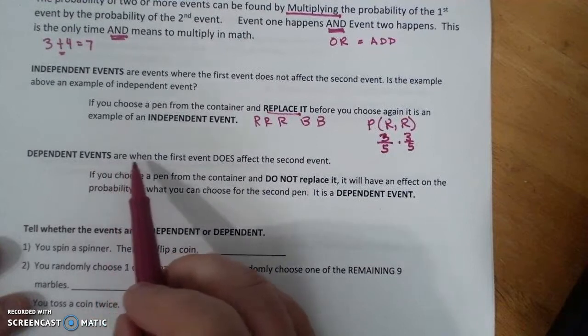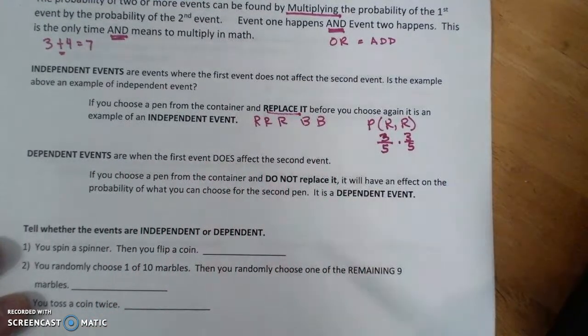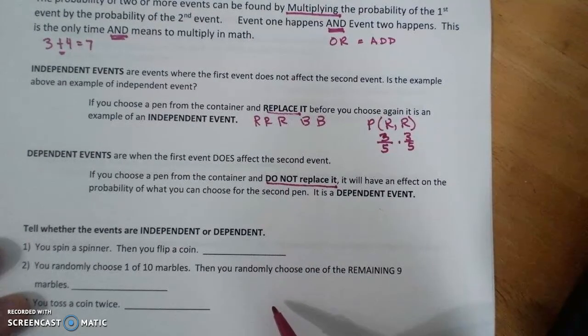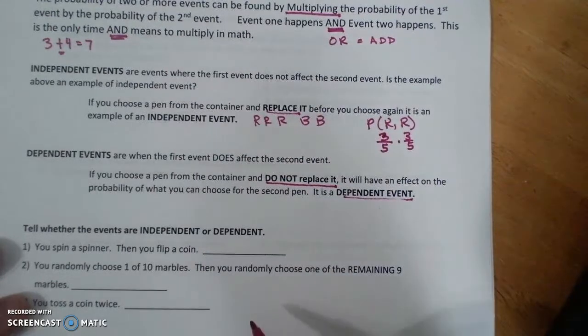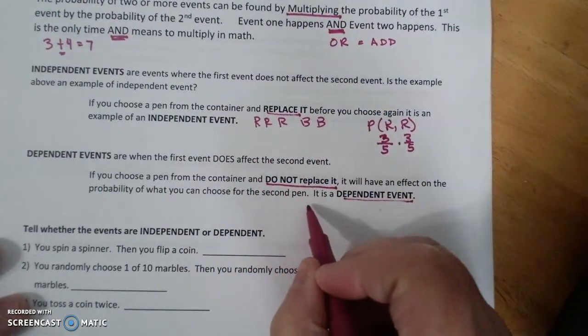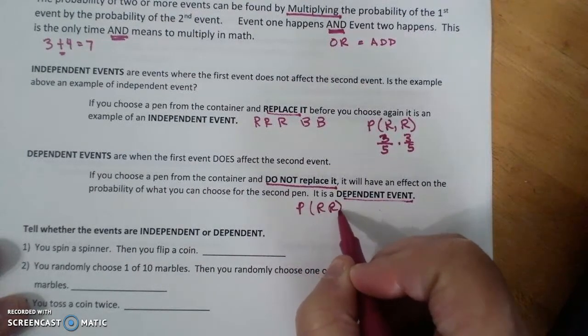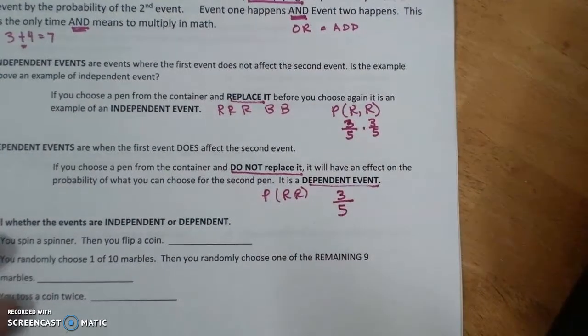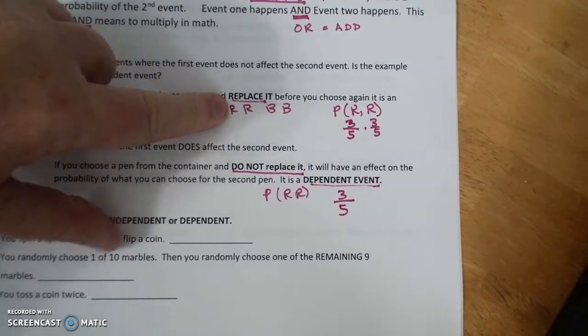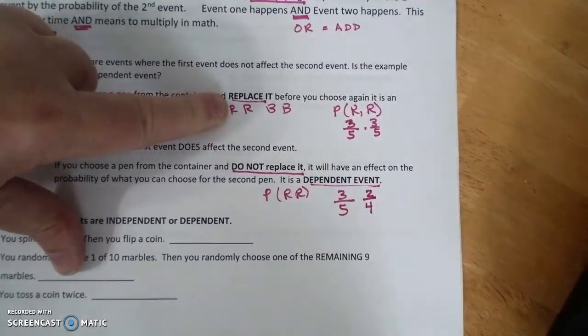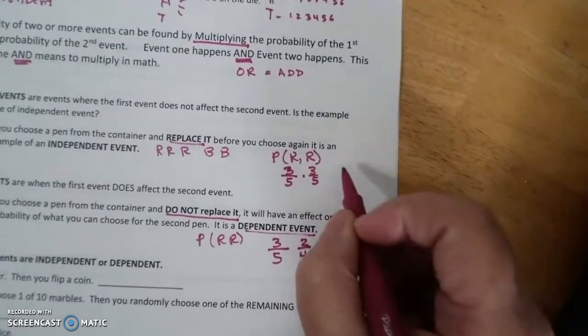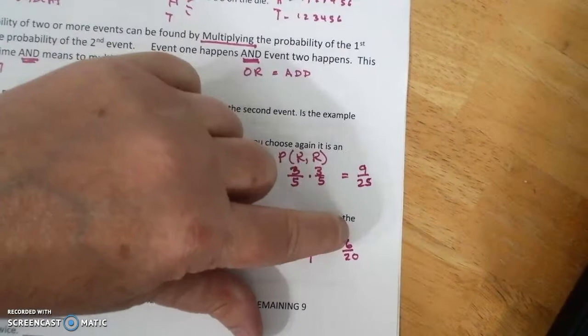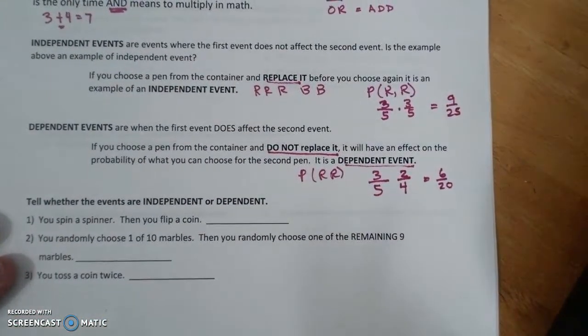In contrast, a dependent event is when the first event does affect the second event. If you choose a pen from the container and do not replace it, it will have an effect on the probability of what you can choose on the second pen. It is a dependent event. I'm going to use the same sample space and do the probability of a red pen and a red pen. On my first one, I have the probability of 3 out of 5, but say I got it, it's now gone, and there are only 2 left with 4 choices. If I do the math here, this is 9 over 25, this is 6 over 20.